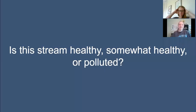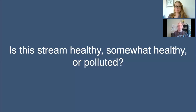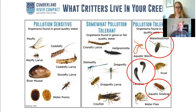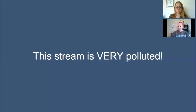Now we'll do an activity where we assess whether a stream is healthy, somewhat healthy, or really polluted. Imagine we're sitting beside a stream with a bucket full of organisms, taking stuff out and making a list. First, we find a water boatman, a leech, and an aquatic sow bug. Based on those findings, this stream looks very polluted so far — we've only found organisms that do well in polluted water, suggesting nothing else was able to survive. But we still have a full bucket, so let's keep looking.